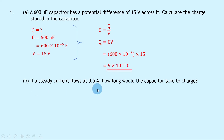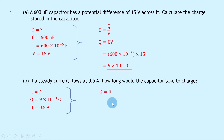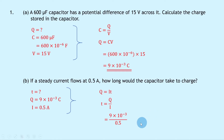Part B says that if a steady current flows at 0.5 amps, how long would the capacitor take to charge? Writing down what we know, we're trying to find the time T. We know the charge Q from part A is 9 times 10 to the minus 3 coulombs, and our current I is 0.5 amps. Writing down our equation relating charge, current and time, we have Q equals IT. Rearranging for time T gives T equals Q over I. Substituting in the numbers gives 9 times 10 to the minus 3 divided by 0.5, giving a final answer of 1.8 times 10 to the minus 2 seconds.